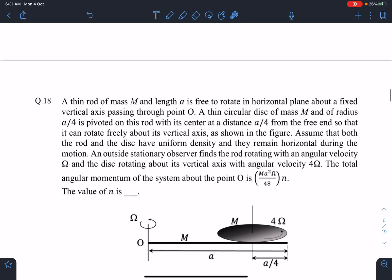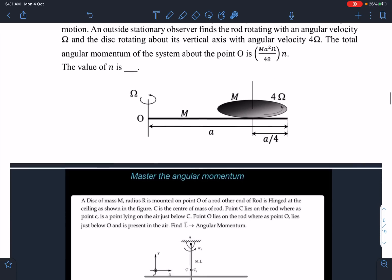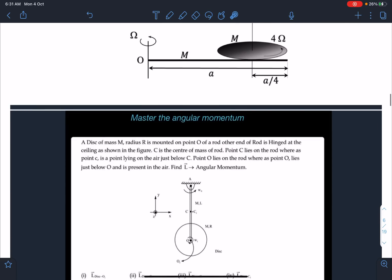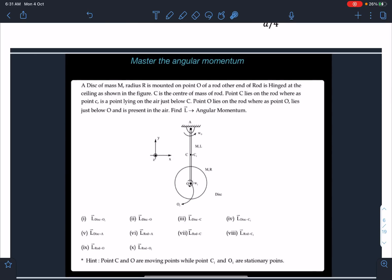Problem number 18 - there is a rod which is rotating with omega, and one disc is also mounted on it and it is also rotating with some other omega. Then they have asked about angular momentum of rod plus disc. To my surprise, this problem appeared in last year's courses also and it is part of my regular course of rotation as well.